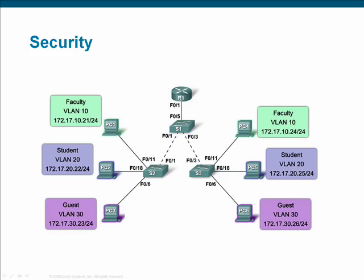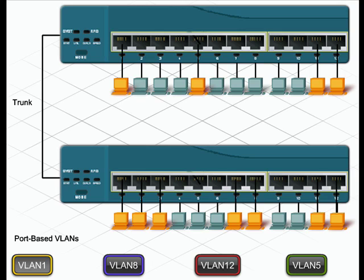Because different VLANs require different IP subnet addresses, a layer of security is also provided by VLAN implementation. In our example of a school, the student VLAN is separate from the faculty and guest VLANs. This logical separation reduces the probability of confidential information, such as grades, student information, and other administrative information, from being compromised. Access control lists can be used to further enhance security across VLANs.